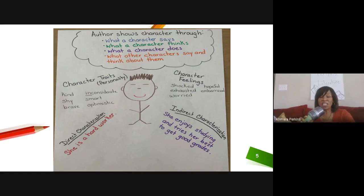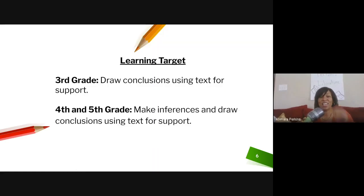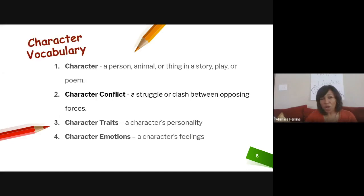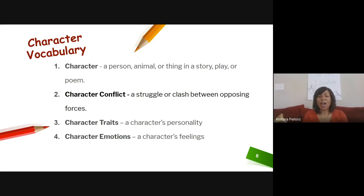Now that we've reviewed those things, let's get started for today's lesson. We are going to continue on with drawing conclusions and making inferences and using text support. Our two questions for today: What is the main character's conflict, and how do they feel about the conflict? We have to first go over our critical vocabulary words. These words are essential for our learning — we must know what these are in order to be successful in meeting our objective.